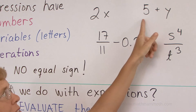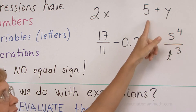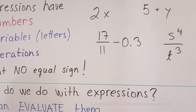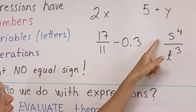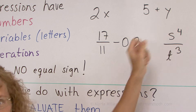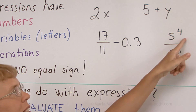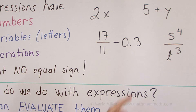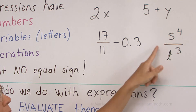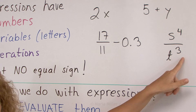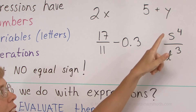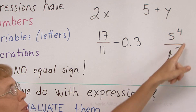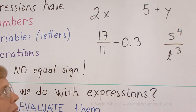Here's another one: 5 plus y. Again, a number, an operation, and a letter. And here, s to the fourth power is an exponent — that's an operation, raising to a power. And then division, and then t to the third power. So this one has letters, numbers, and operations.